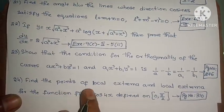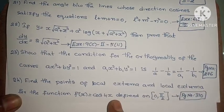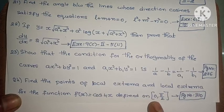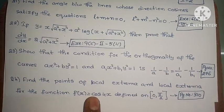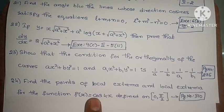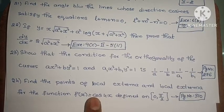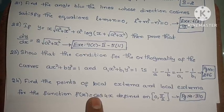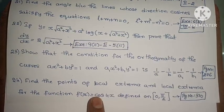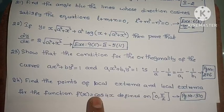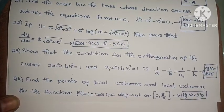Next, find the points of local extrema and local extrema for the function f of x equals cos 4x defined on closed interval 0 to pi by 2. Page number 310, example problem. If you want to ask questions about solutions, there are already important problem videos. You can see the link in the description. If you have any doubts in the comment box, please like, share, and subscribe to our channel. Thank you.